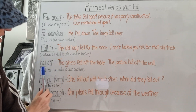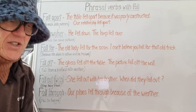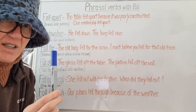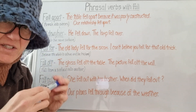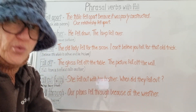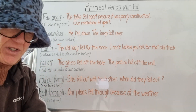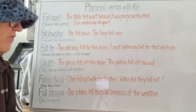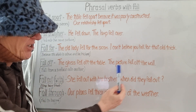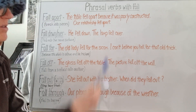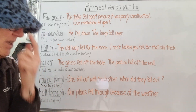'Fall off' is to fall from one surface onto another surface. The glass fell off the table — it was on the table, it was rolling, it fell off and it's no longer on the table, it's on the ground. The picture fell off the wall — the picture was on the wall and it fell off the wall.